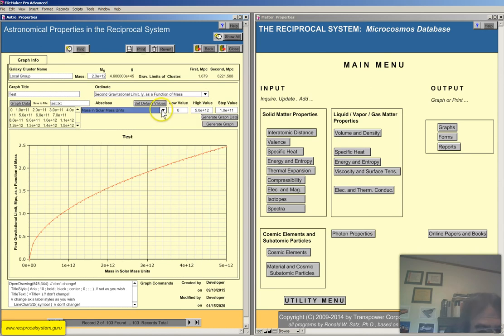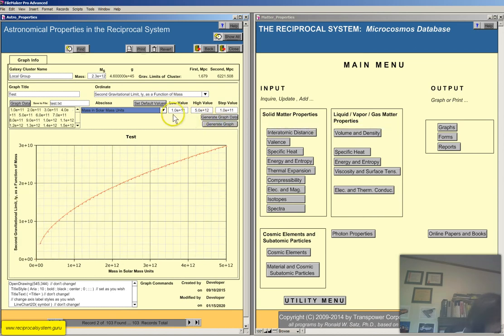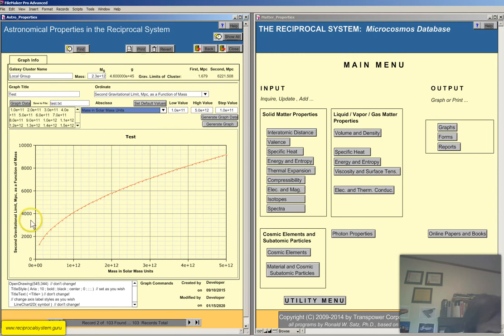Let's go to the next one. Second gravitational limit is a function of mass. Again, set default values, generate the graph. So here's the second gravitational limit. You can see how much bigger this is. Not quite 2 times 7, 10 to the 10th. Yeah, we want to stick with mass in solar that. That's going to be the most common. And then we'll go second gravitational limit in terms of megaparsecs. We'll keep that the same, set default values, generate the data, generate the graphs. So this is in megaparsecs. It's just a better unit to use. So this is roughly 6,000 megaparsecs.